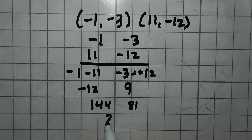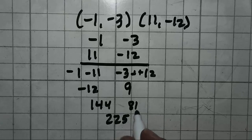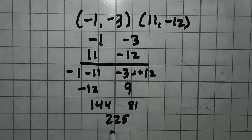If you add those together, you get 225. And because you know your square numbers, I know that you know the square root of that is 15. So the distance is 15.